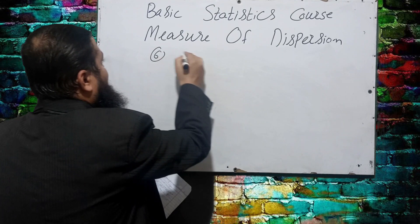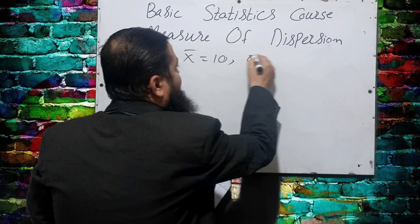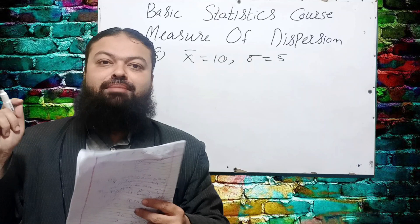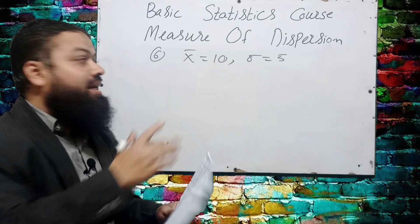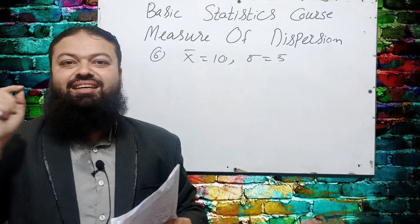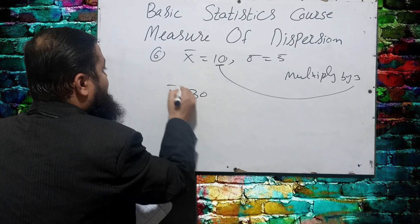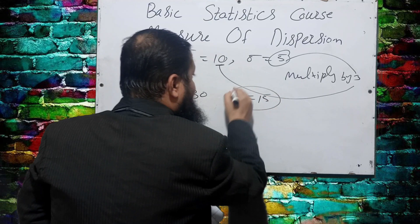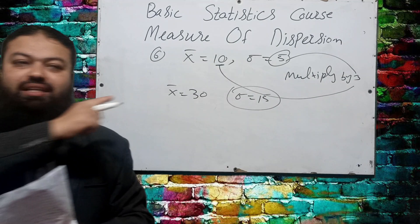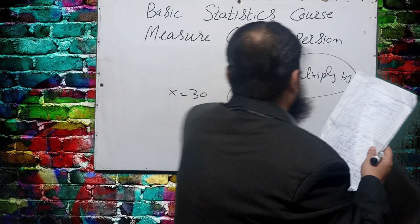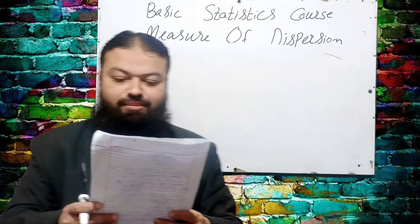Question number six: for a set of observations, x̄ = 10 and σ = 5. If all the observations are multiplied by 3, then the resulting mean and σ will be — we know both x̄ and standard deviation are affected by change of scale. Multiplying every value by 3: x̄ becomes 10 × 3 = 30, and σ becomes 5 × 3 = 15. In the exam, x̄ = 30 and σ = 15 is the correct option.